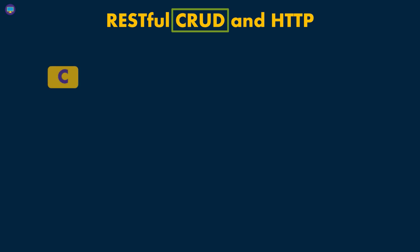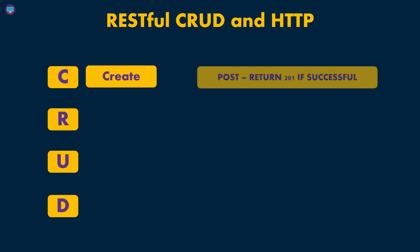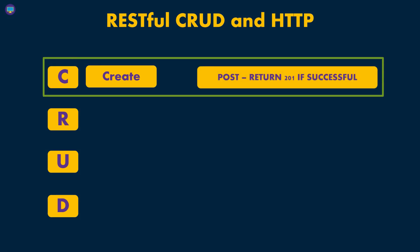So the C is for create, the R is for read or to get data, the U is for update, and the D is for delete. You can now see how this connects with HTTP to create this entire web service architecture. The C is for create, and whenever you need to create data on the server, you're going to send a POST request. They associate creating a resource on the server with a POST request.